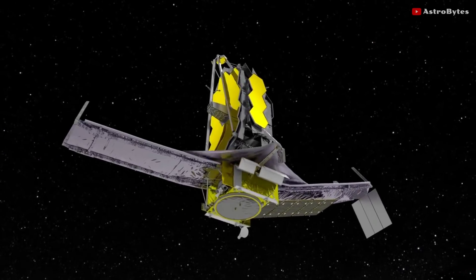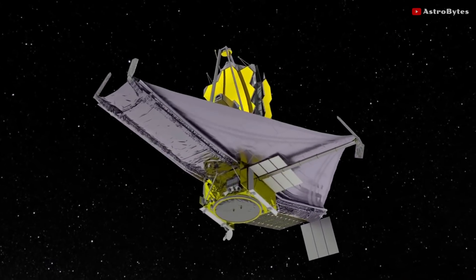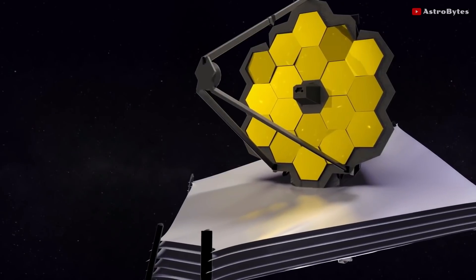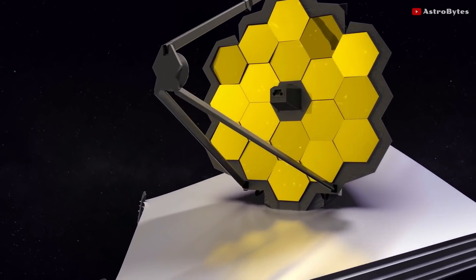This star will help the telescope to align its 18 honeycomb shaped mirrors. The telescope will keep staring at this star while optics experts move the mirror segments in small steps to create a perfectly smooth surface.